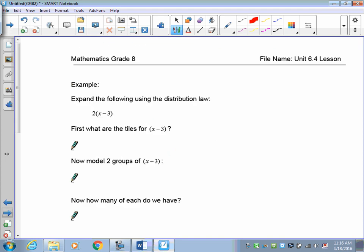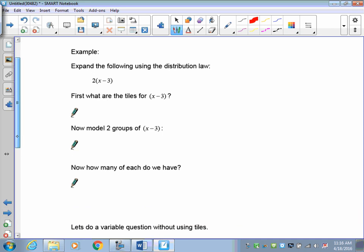Now let's expand using the following distribution model, but now let's take and not use, I said, we're going to do the tiles again just for more practice here. So I've got x minus 3, and I want two groups of x minus 3. So first, what is the tiles for x minus 3? Well, there's x and here is minus 3.